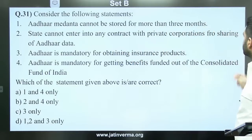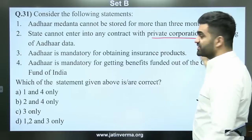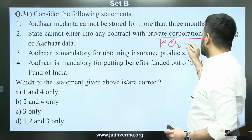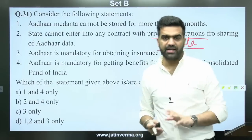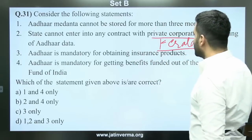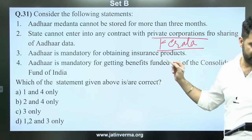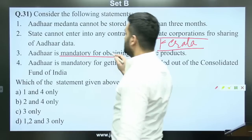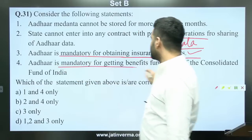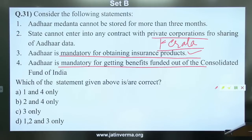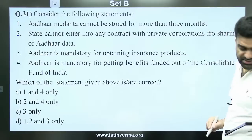Question 31 relates to Aadhaar data. The state cannot enter into any contract with private corporations for sharing Aadhaar data. This connects to a case where the state shared COVID-19 data with a private agency and that data was leaked. Aadhaar is mandatory for obtaining insurance products — is this true? It is not necessary. The Supreme Court's Section 57 judgment clarified this.